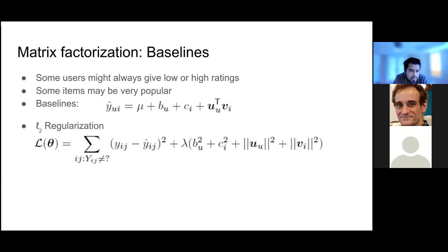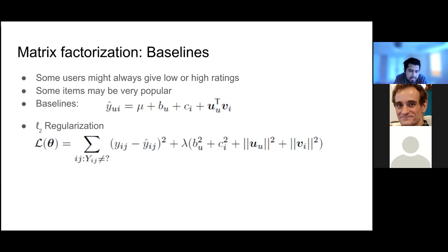We also need to add baselines because some users might always give low or high ratings — they're too generous or too pessimistic. Also, some items are very popular and garner high ratings regardless of user preferences. We can add these baselines as variables in the prediction formula: b_u is the bias for the user and b_i is the bias for the item. We can also add L2 regularization, with a squared term visible in the formula.